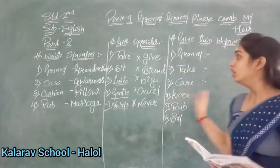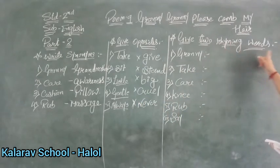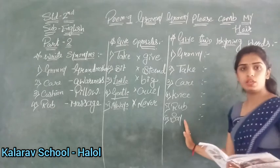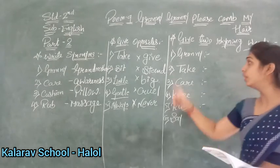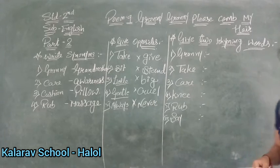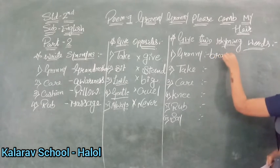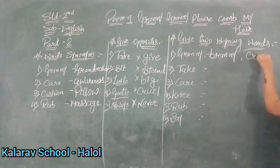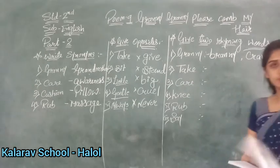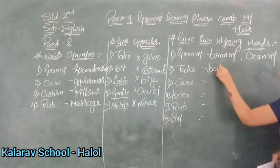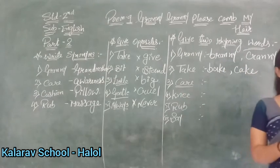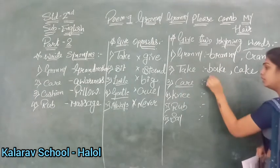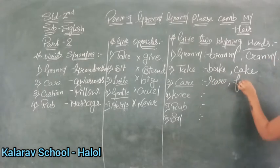Clear after opposites? Yes. Now next we are doing rhyming words. Give two rhyming words for each one — you have to write two rhyming words for each. First one given is granny. Rhyming words: grainy and cranny. Next is take — bake and cake. Then care — where and fair.